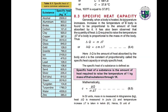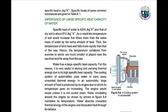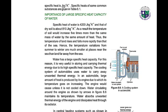Our next topic is specific heat capacity. The specific heat of a substance is the amount of heat required to raise the temperature of 1 kilogram of that substance through 1 Kelvin. It is given by the formula: C equals delta Q over mass times change in temperature. Mass M is measured in kilograms, change in heat in joules, and temperature in Kelvin. The SI unit of specific heat capacity is joules per kilogram per Kelvin.